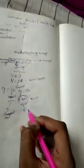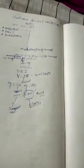Silver actually has better conductor properties than copper, but we prefer copper because it is cheaper. So copper is most widely used among these conductor materials.